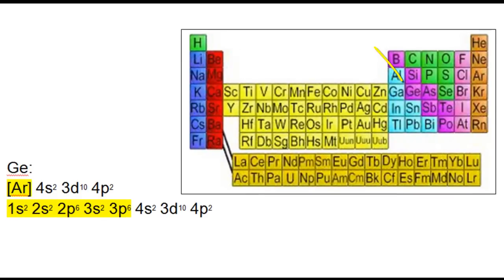The noble gas electron configuration for germanium is the symbol of argon followed by 4s2, 3d10, 4p2. We choose argon because argon is the nearest preceding noble gas from germanium.